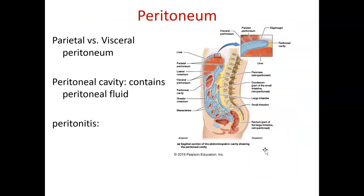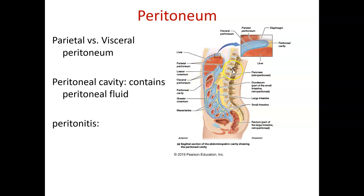We need to review the peritoneum. We have a giant peritoneal cavity with visceral and parietal peritoneum. The visceral peritoneum attaches to each organ, surrounding it. The parietal peritoneum lines the whole cavity. The cavity contains peritoneal fluid. Peritonitis is some sort of infection inside the cavity.